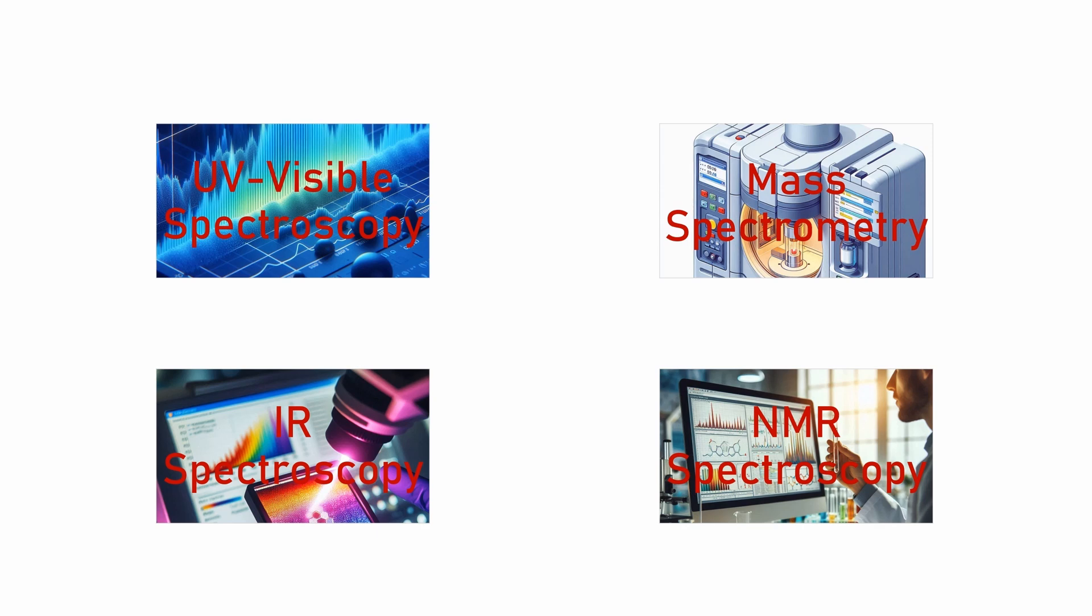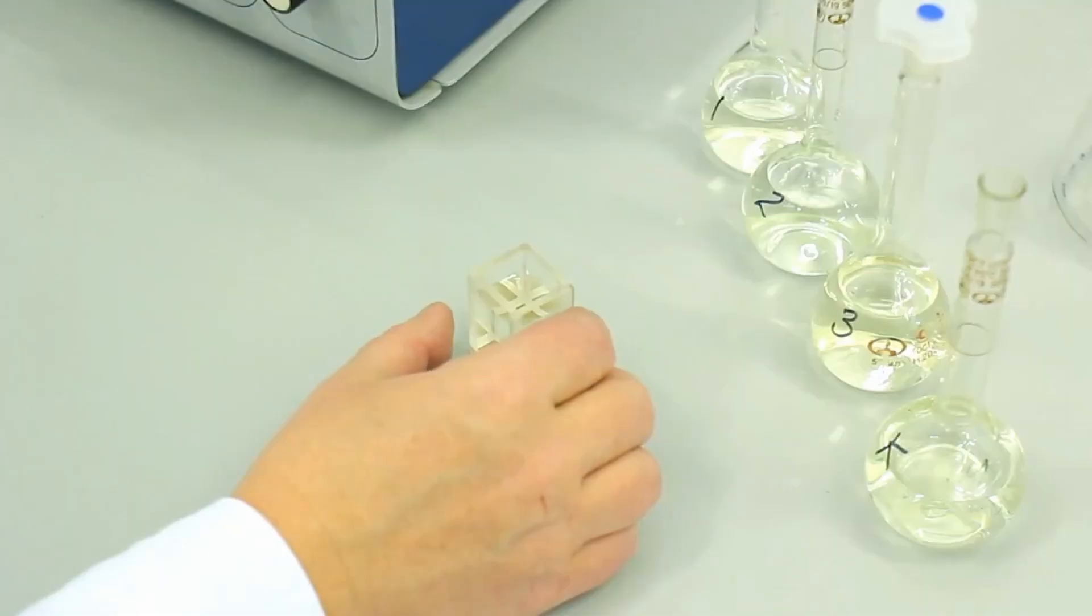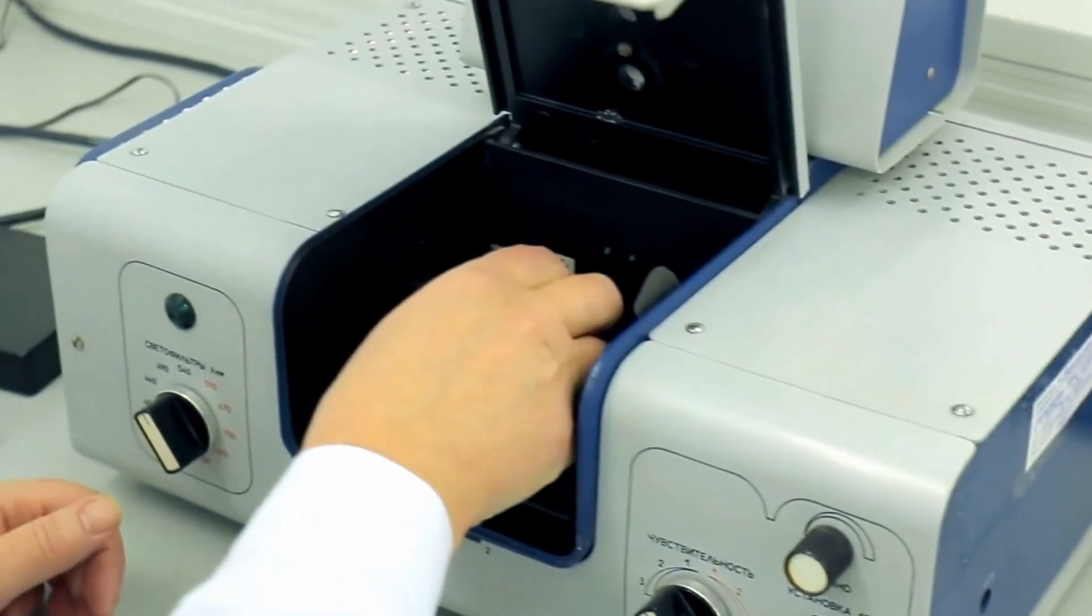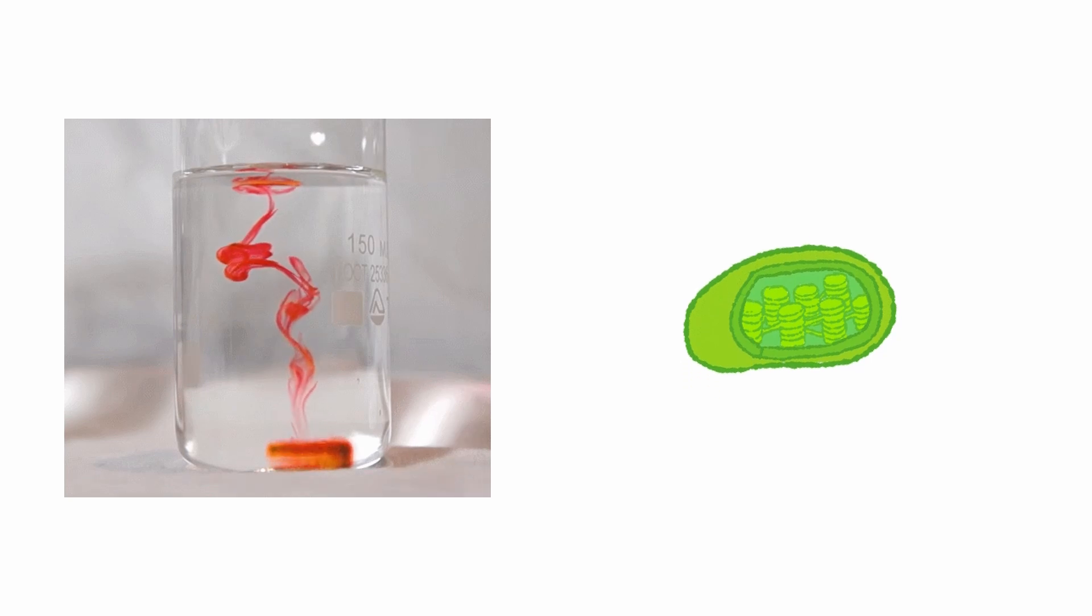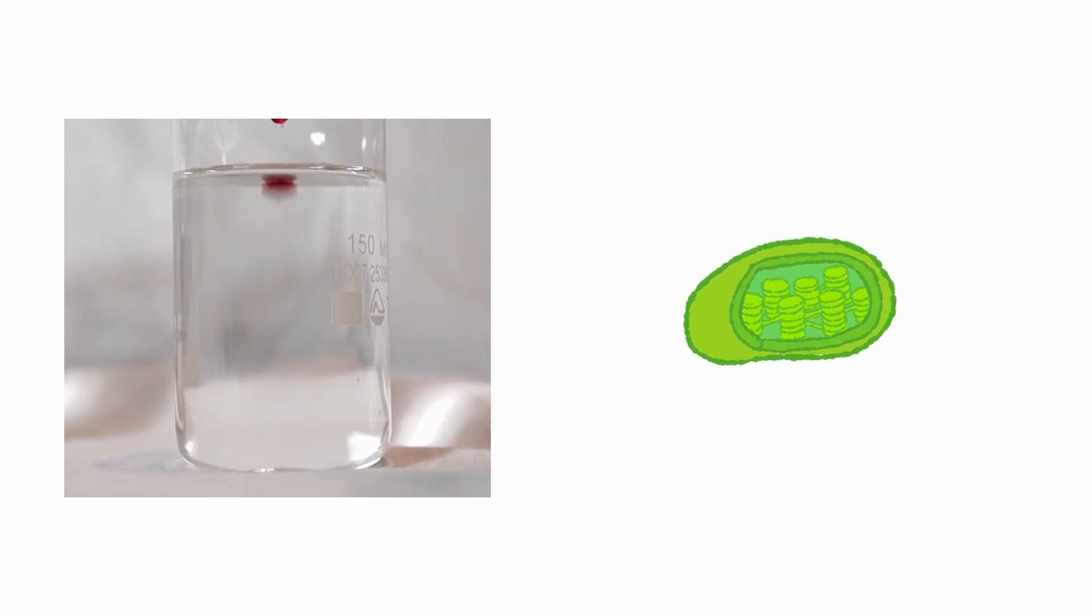First up is UV Visible Spectroscopy, or UV-Vis. This technique measures the absorbance of light in the ultraviolet and visible regions, helping analyze compounds and solutions. It's perfect for studying things like dyes and chlorophyll.